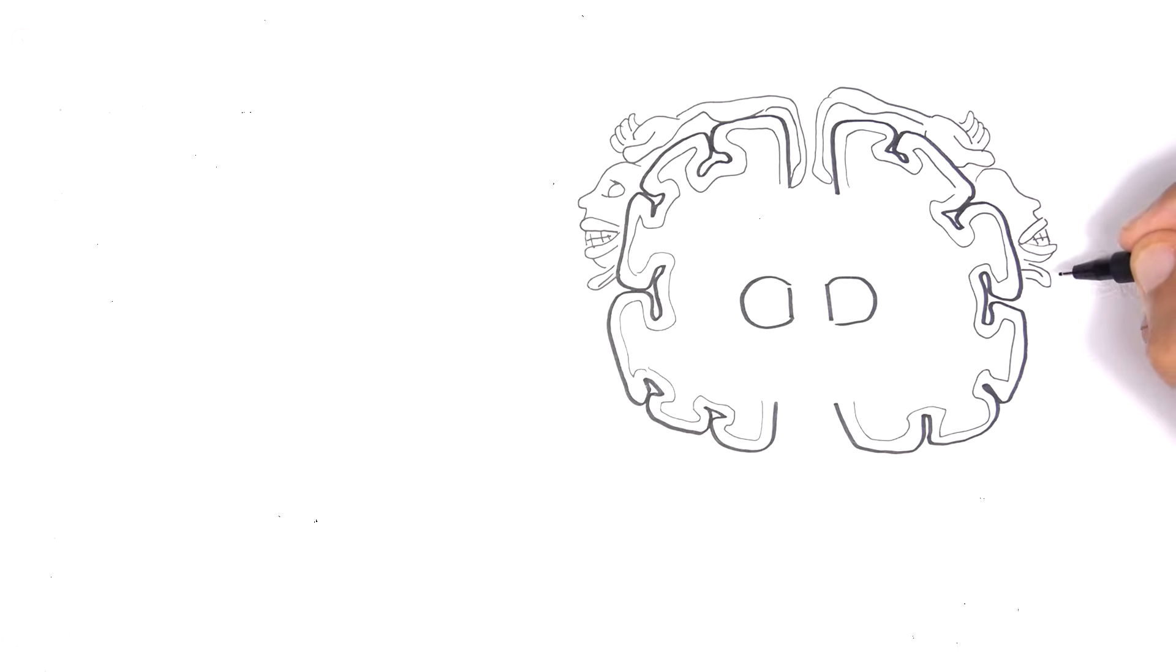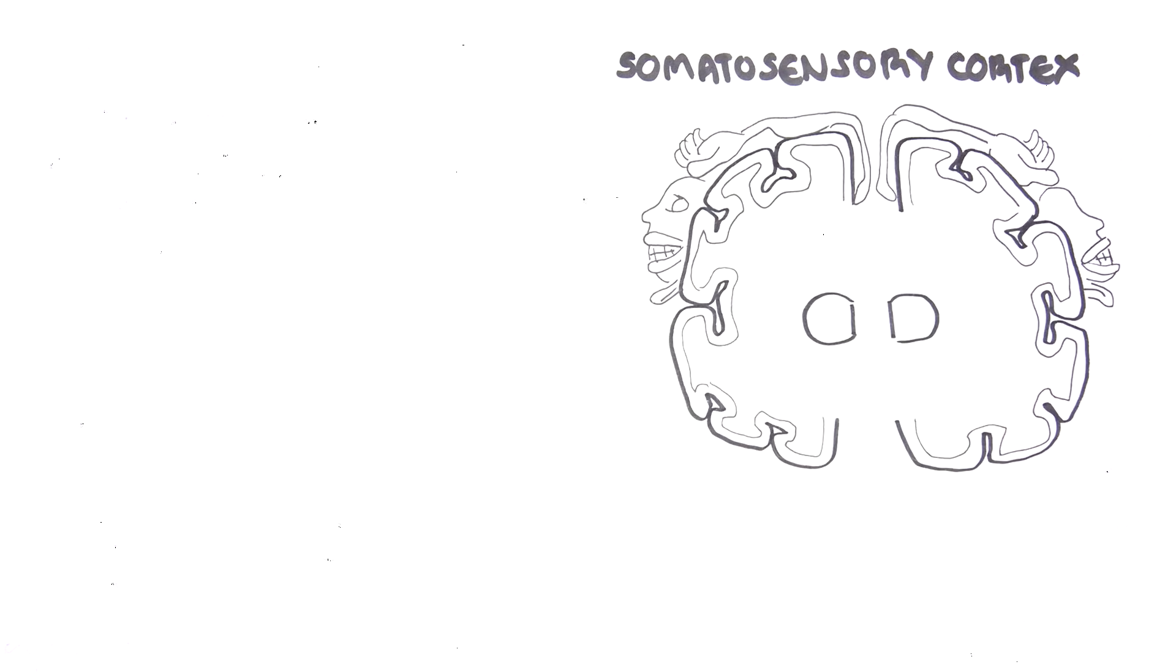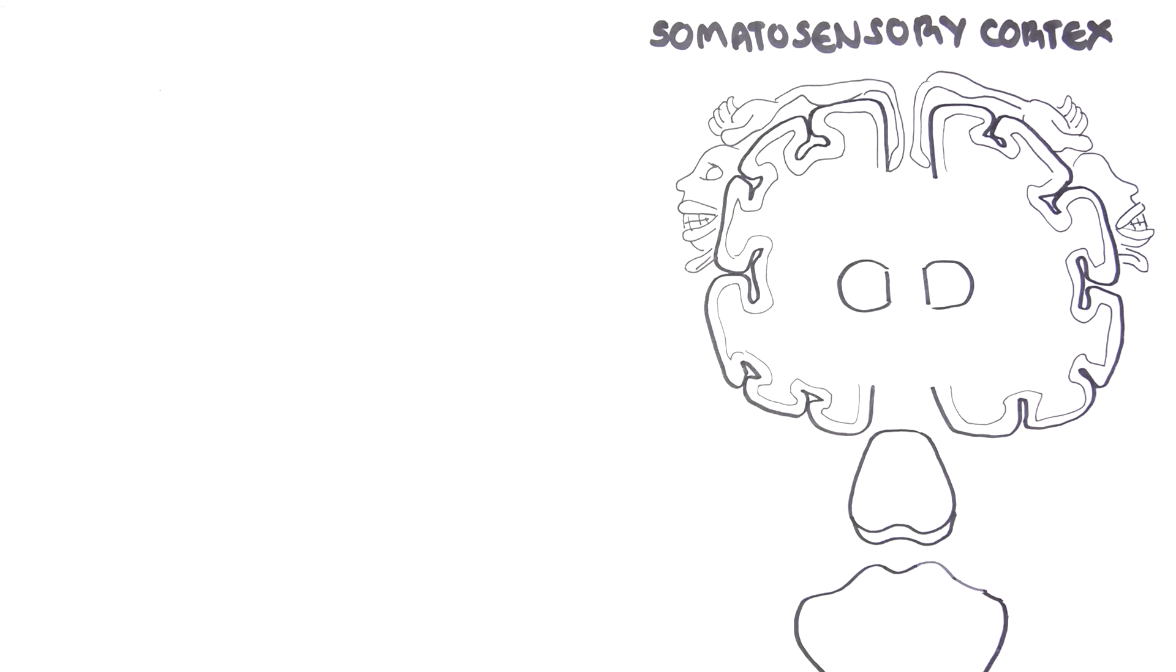The somatosensory cortex can be further divided into areas representing different parts of your body, your limbs. The brain connects to the brainstem, which is made up of three important parts: the midbrain, the pons, and the medulla.